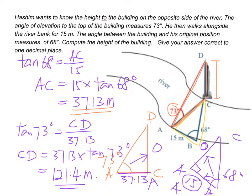So we can see that by just measuring the river bank, this 15 meters of river bank, and measuring the angles, we can find out the height of a building.